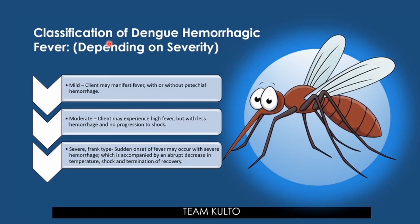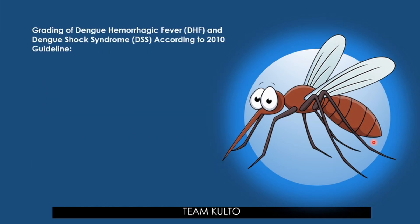Now let's discuss classification of dengue hemorrhagic fever by severity. Mild: client may manifest fever with or without hemorrhage. Moderate: client may experience high fever with less hemorrhage and no progression to shock. Severe (frank type): sudden onset of fever with severe hemorrhage, accompanied by an abrupt decrease in temperature, shock, and termination of recovery.